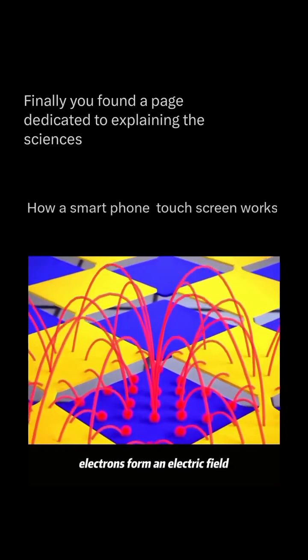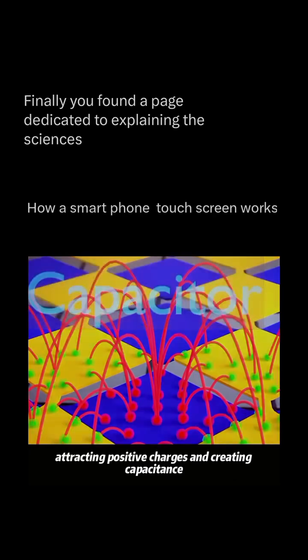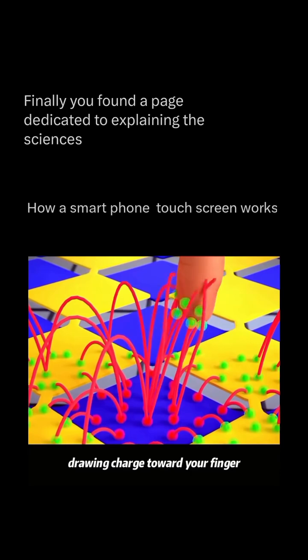Normally, electrons form an electric field, attracting positive charges and creating capacitance. When your finger gets close, it disrupts the field, drawing charge toward your finger.